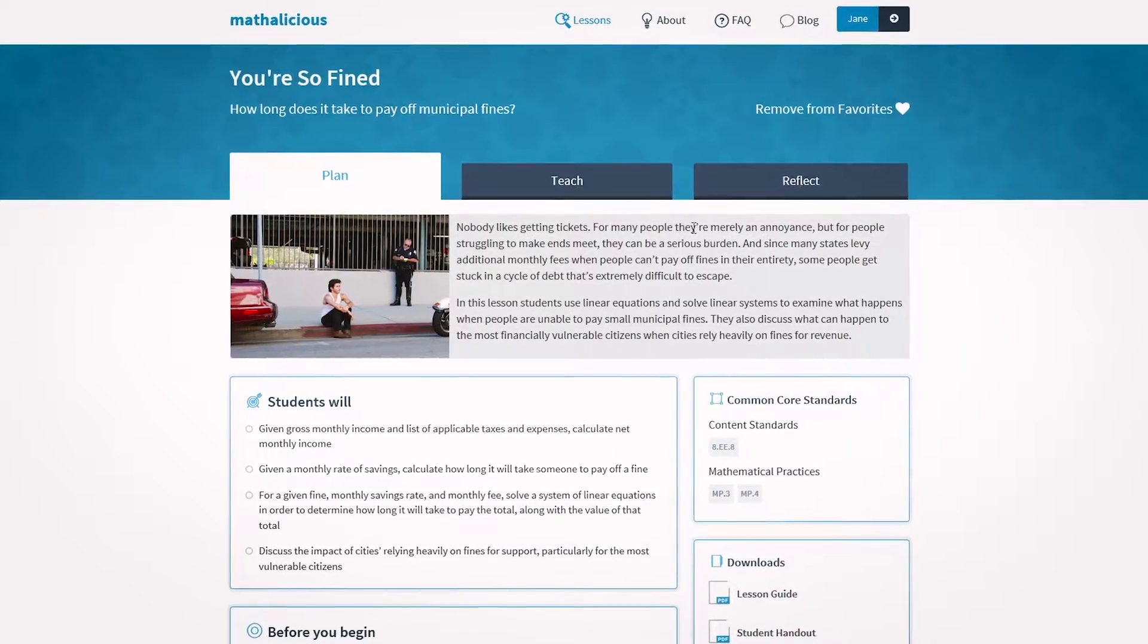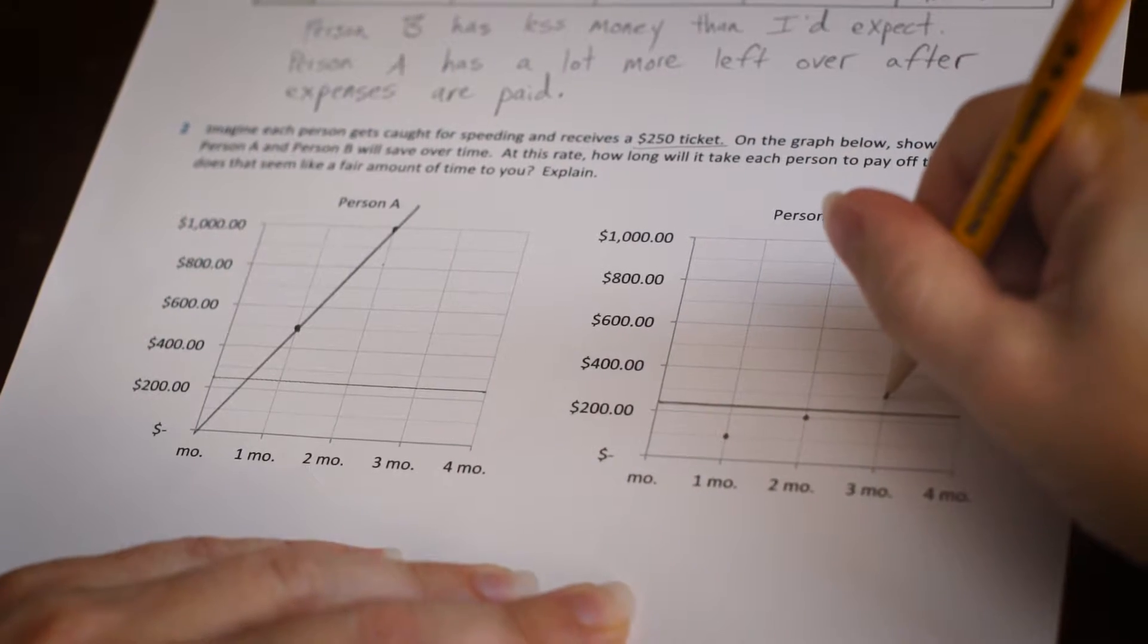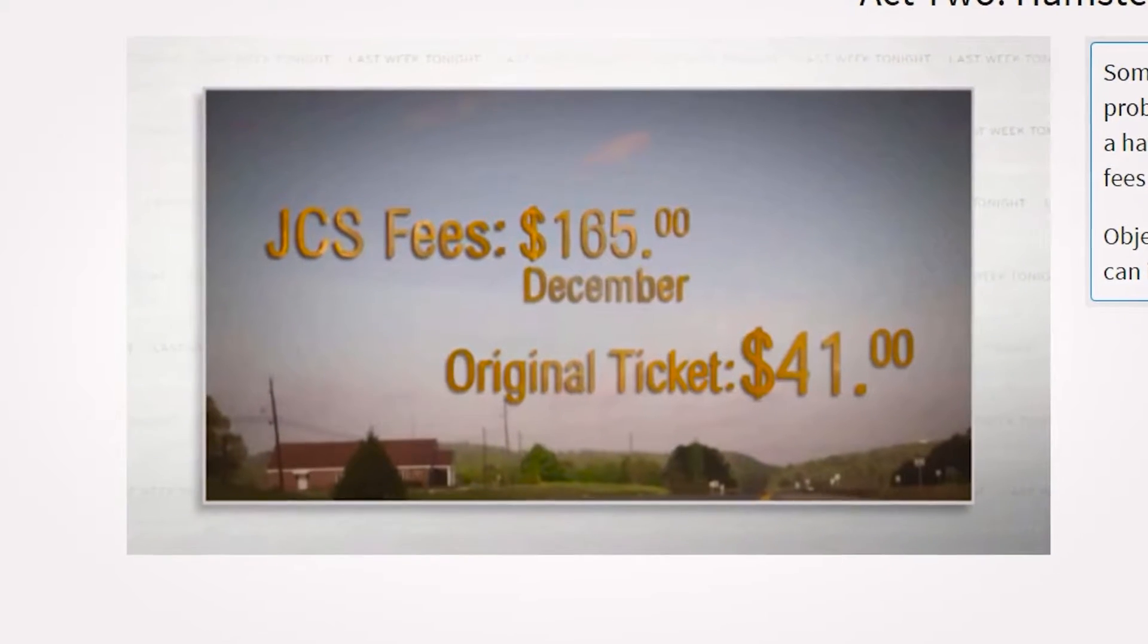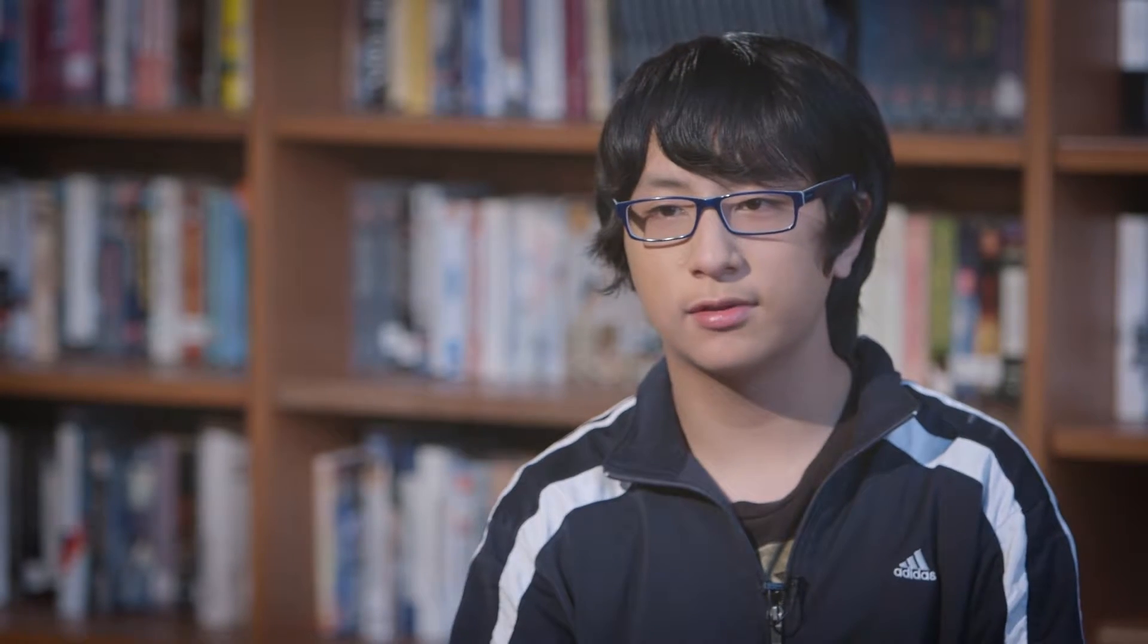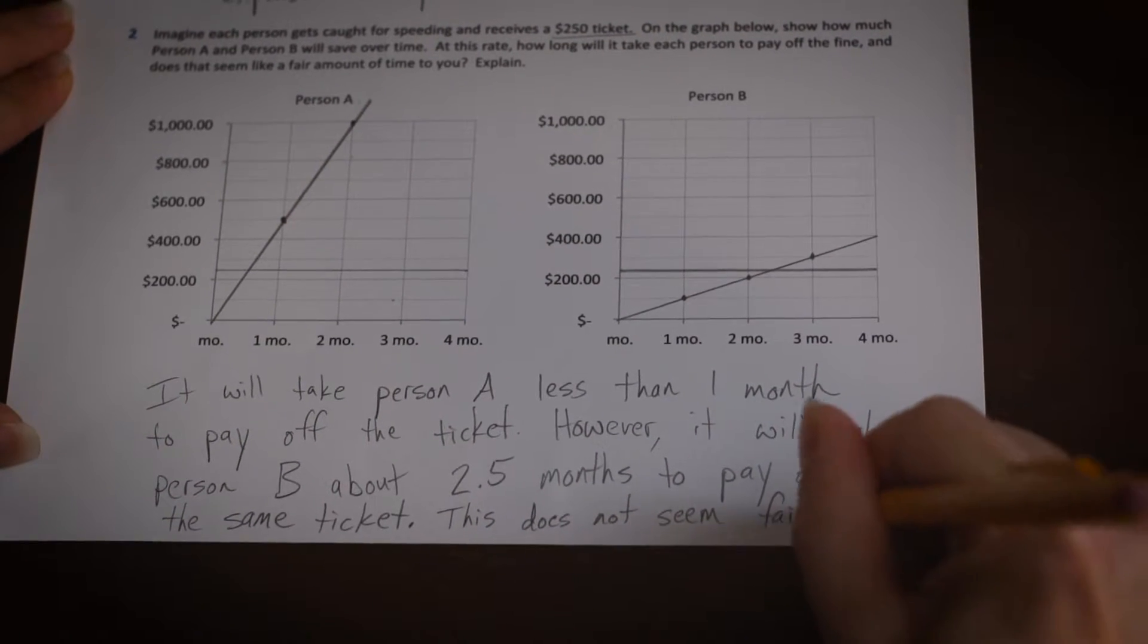In the lesson You're So Find, students compare how long it will take different people to pay off a speeding ticket. In some places they have a fee that increases each month. In this situation it was $75 more. They just keep charging you, and then eventually it's really impossible. Students use linear functions to determine that some people will never be able to pay off their fines.